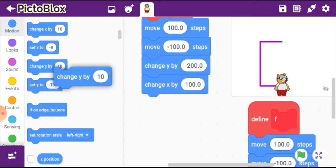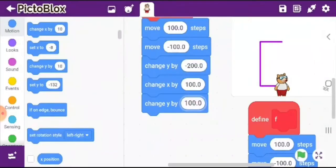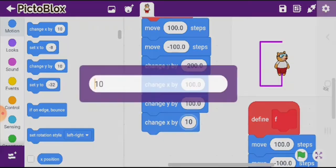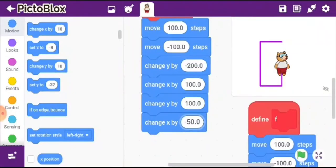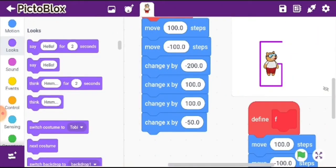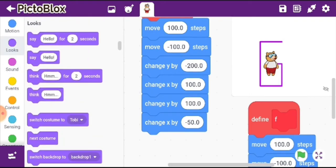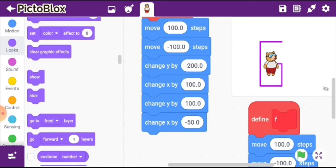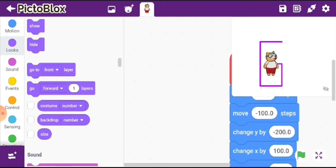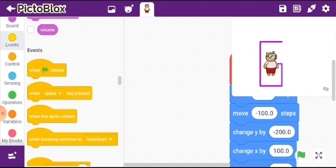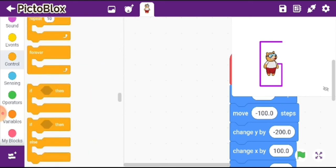I want change y by 100 and change x by minus 50. So this alphabet looks very good. Let us just hide and see. Yeah, so G looks very good.